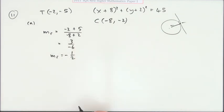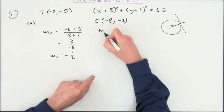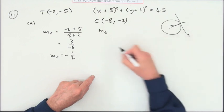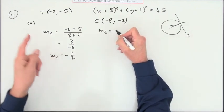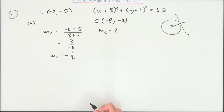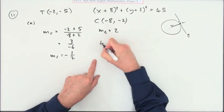Which means that the gradient of the tangent will be the negative of the reciprocal of that, will be 2. So the equation of the tangent...